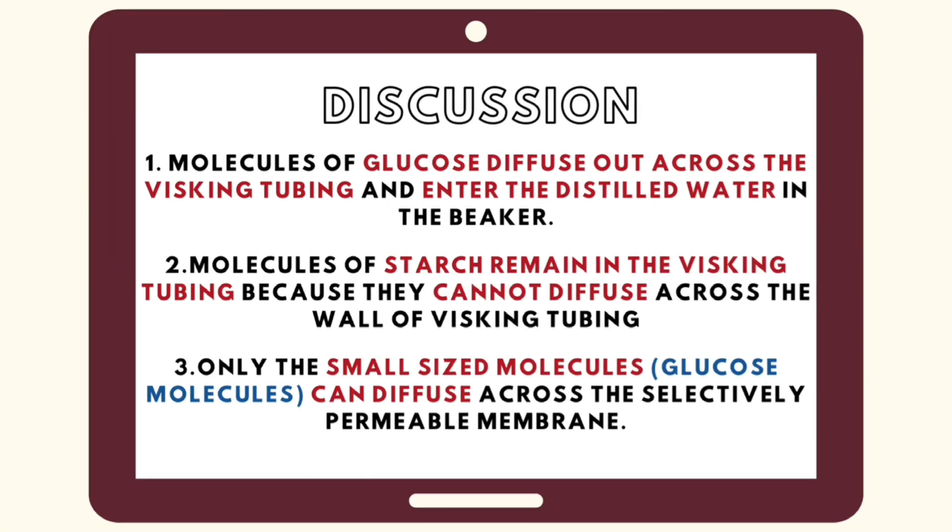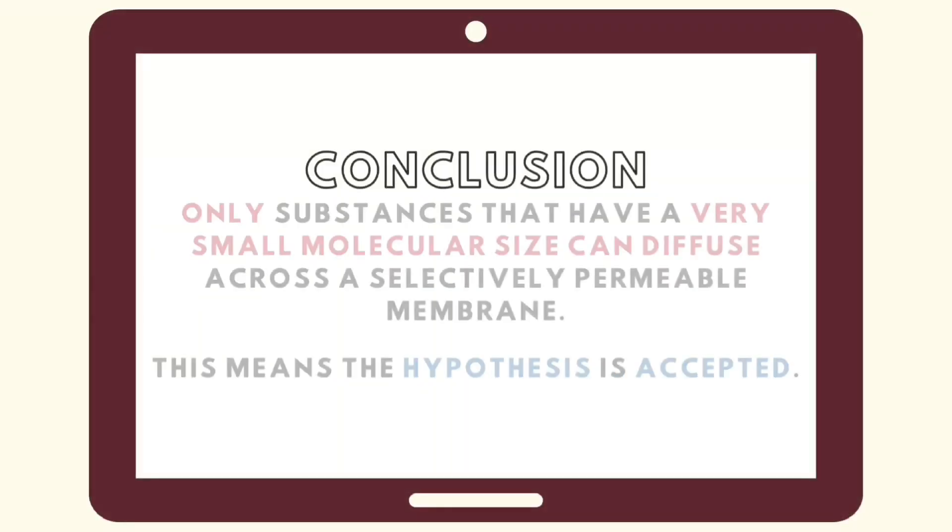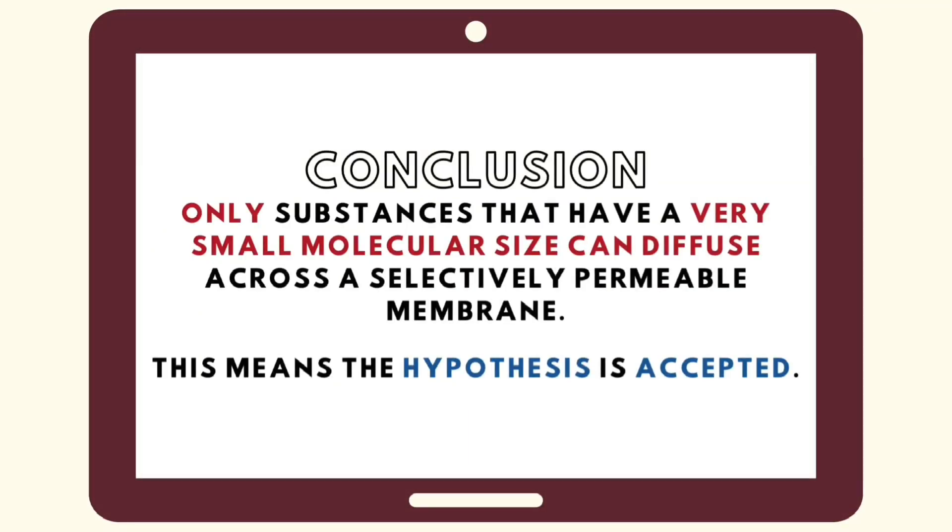The discussion of this experiment: molecules of glucose diffuse out across the visking tubing and enter the distilled water in the beaker. Next, molecules of starch remain in the visking tubing because they cannot diffuse across the wall of visking tubing. And lastly, only the small size molecules can diffuse across the semi-permeable membrane.